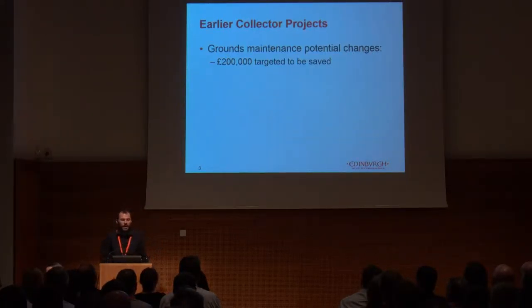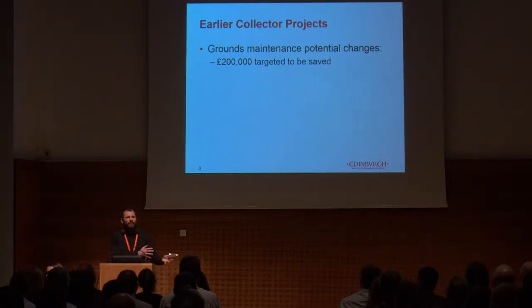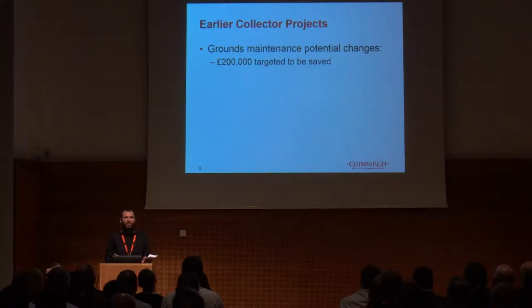At the time we would have used the Collector but it was only supporting points, so we had to use the ArcGIS for Android app because it was using polygons. The Collector now supports polygons, so we would use it for polygon projects going forward. We used the Android app to identify areas where we could change how we maintain parks and green space - for example changing standard amenity grass to low maintenance grass, which we're now rebranding as 'naturalized grass'. We targeted saving £200,000 in the first phase; we didn't quite match that in the first year but we did remove £200,000 from our budgets going forward.